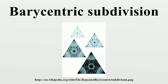In geometry, a barycentric subdivision is a standard way of dividing an arbitrary convex polygon into triangles, a convex polyhedron into tetrahedra, or, in general, a convex polytope into simplices with the same dimension, by connecting the barycenters of their faces in a specific way.